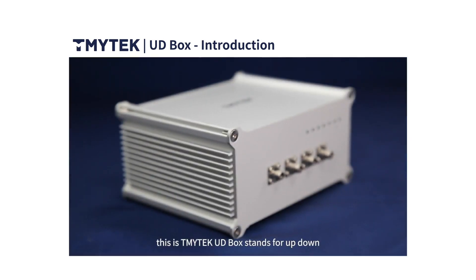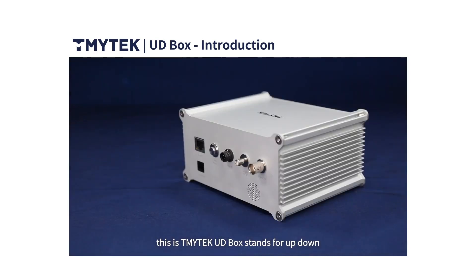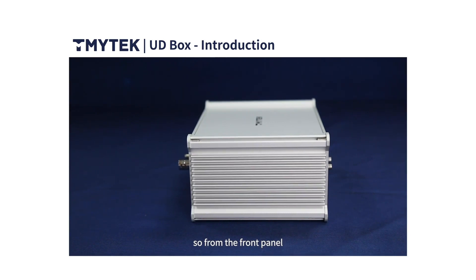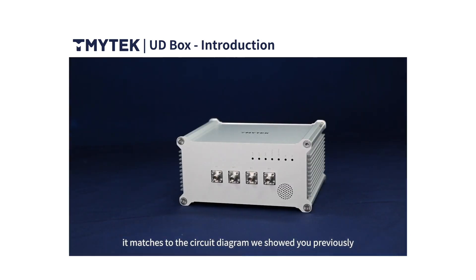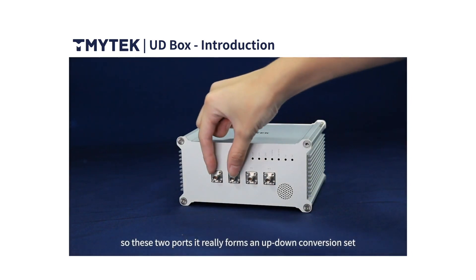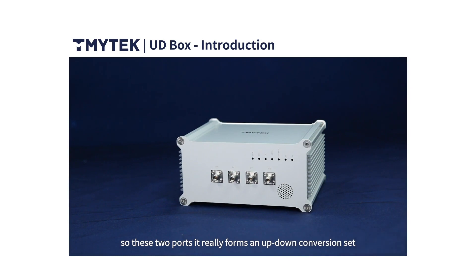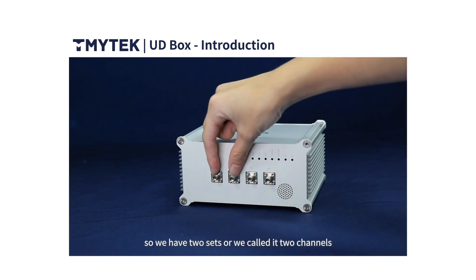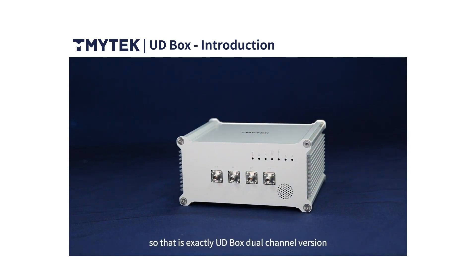Here you go — this is the TMI Tech UDBOX. It stands for up and down conversion. UDBOX works exactly as described. From the front panel, it maps to the circuit diagram I showed you. IF1 and RF1 form one up-and-down conversion set, and IF2 and RF2 form the second set. So we have two channels — this is the UDBOX dual channel version. That's a very special design for up and down conversion.